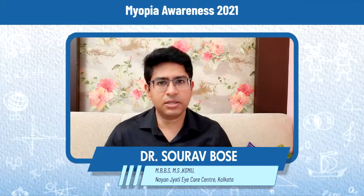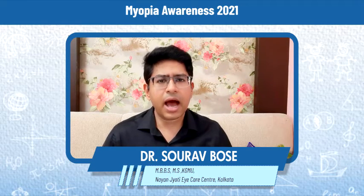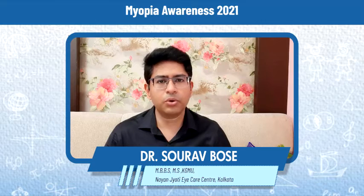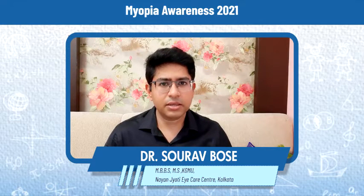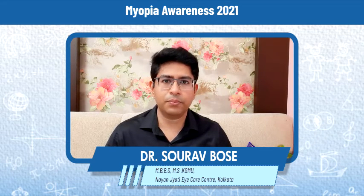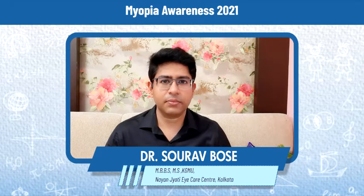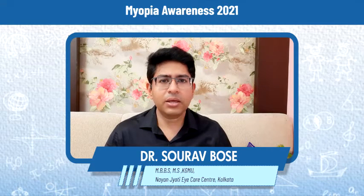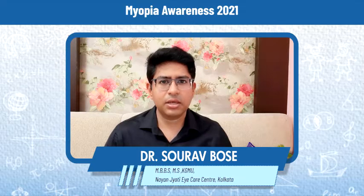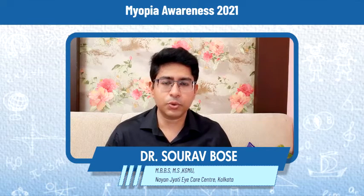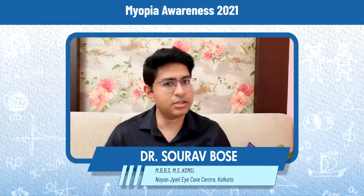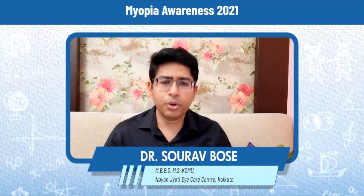Preventive steps include increasing the proper distance between the eyes and the reading material — ideally, the distance should be about one and a half to two feet. Second, using proper illumination in the room. Third, increasing outdoor activities. Fourth, while viewing a computer, laptop, or other digital gadgets, having a proper setting for brightness and contrast so that undue pressure on the eye is avoided.